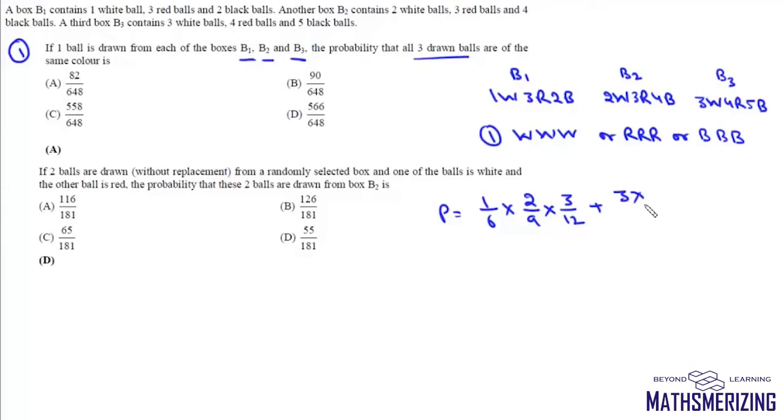Now if it is all red, then it will be 3 into 3 into 4 divided by 6 into 9 into 12 and plus 2.